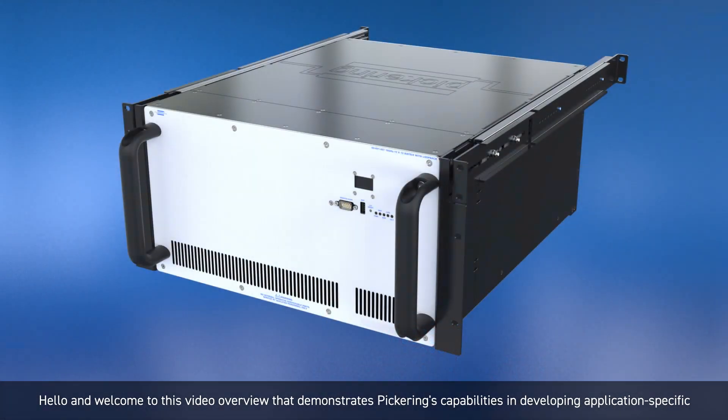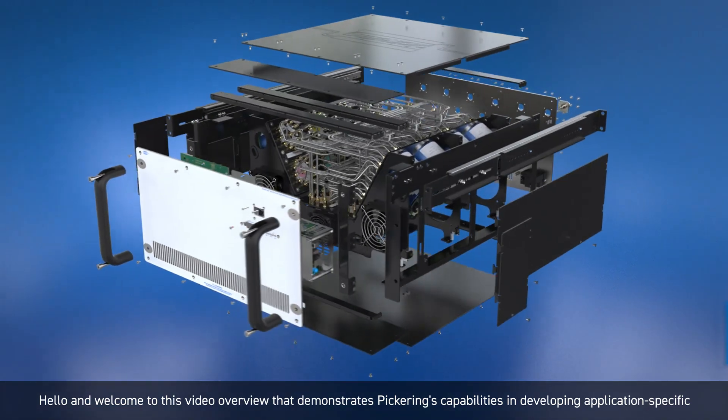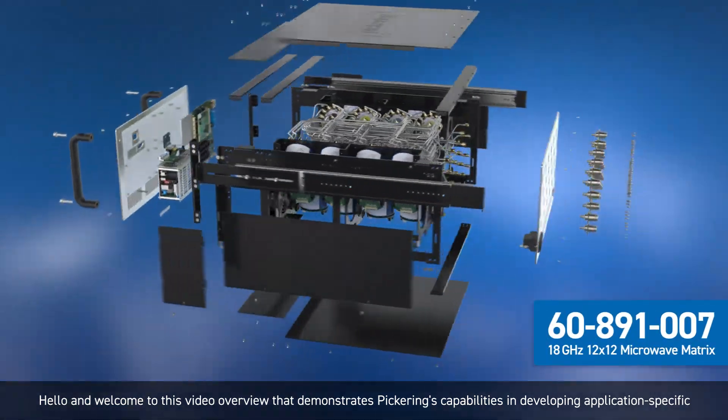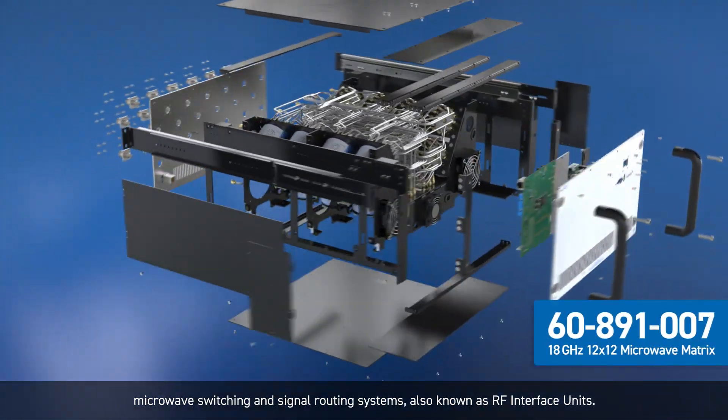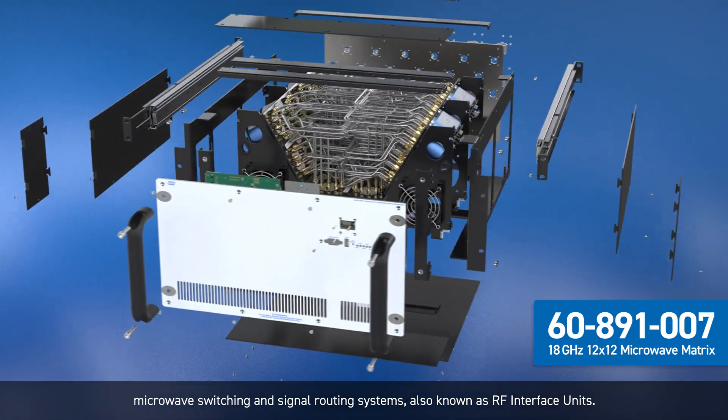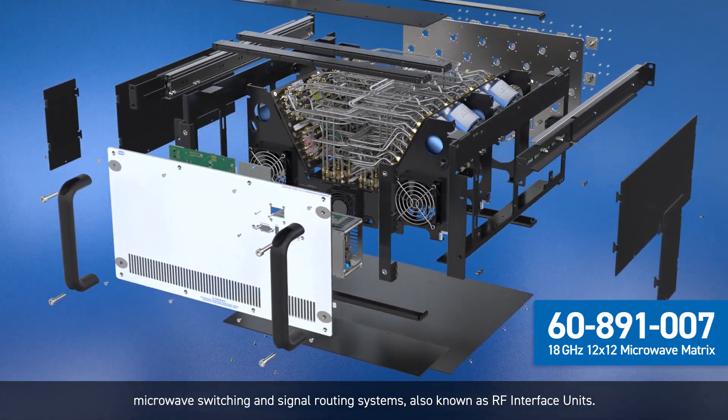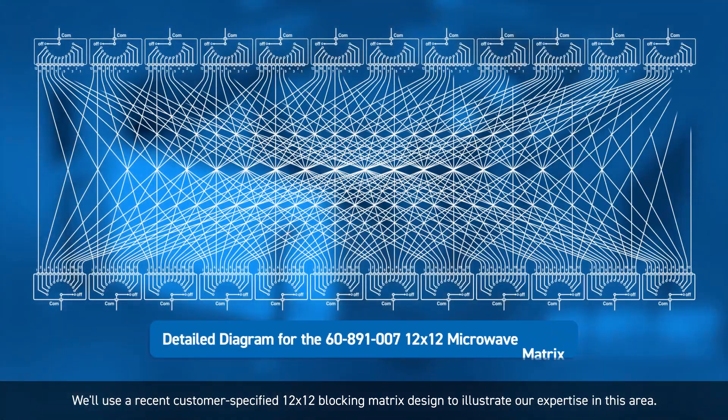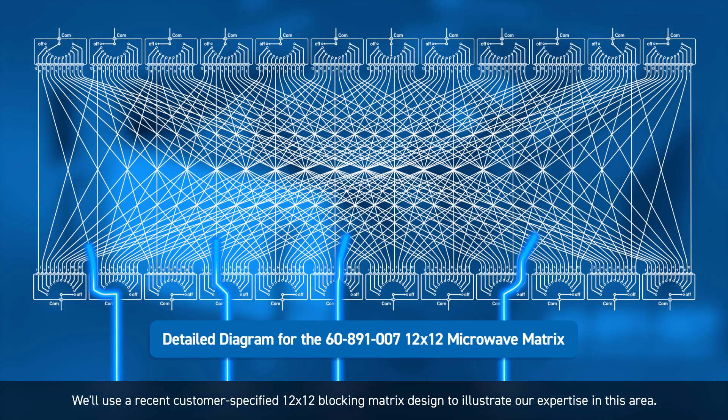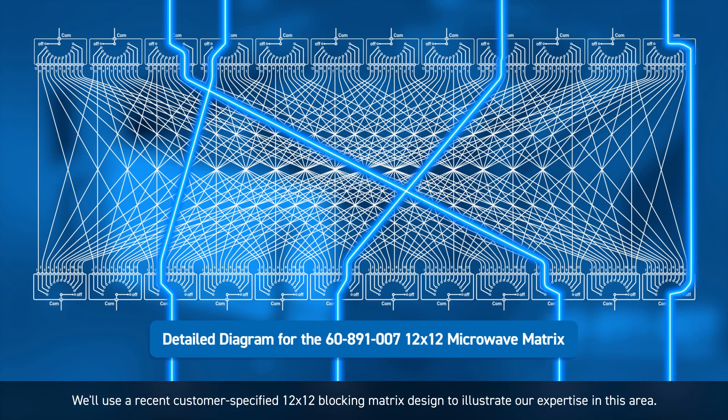Hello and welcome to this video overview that demonstrates Pickering's capabilities in developing application-specific microwave switching and signal routing systems, also known as RF interface units. We'll use a recent customer-specified 12 by 12 blocking matrix design to illustrate our expertise in this area.